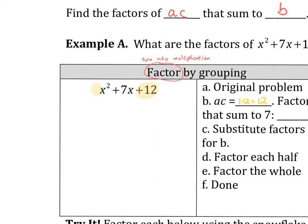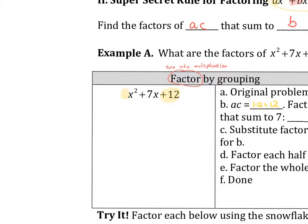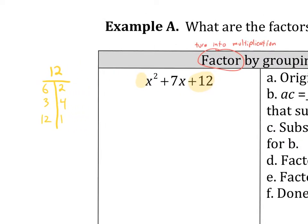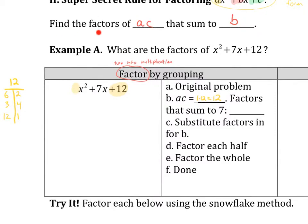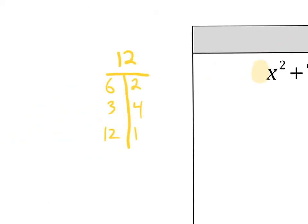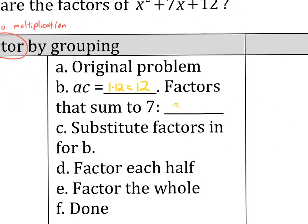We're going to identify what our a and our c are. So a times c is 1 times 12, which is just 12. So we need to factor the 12. When we factor out the 12, these are my only options: 1 and 12, 2 and 6, 3 and 4. We're only looking at whole numbers, positive versions. The question we're asking is: what are the factors of 12 that add to 7? These two add to 7. The factors that sum to 7 are 3 and 4.